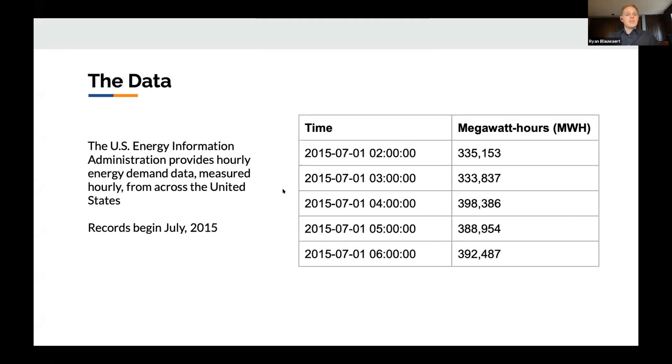A little bit about the data here. All of the data was taken from the U.S. Energy Information Administration, and it's pretty simple. Really, it's just a timestamp and then the number of megawatt hours of electricity demanded for that hour. These records on the EIA website begin in July of 2015 and are updated hourly.